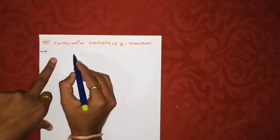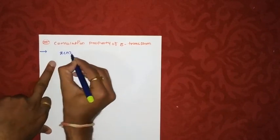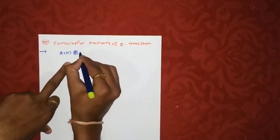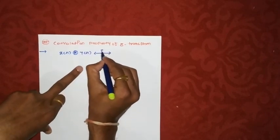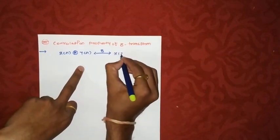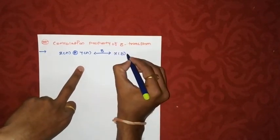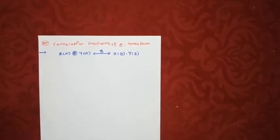So first we will see its statement. It simply states that convolution in time domain, that I am writing x of n convolved with y of n, its Z-transform will be multiplication in frequency domain. So x of n's Z-transform x of Z into y of n's Z-transform will be y of Z.